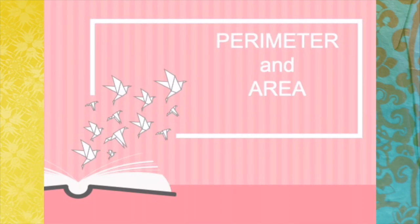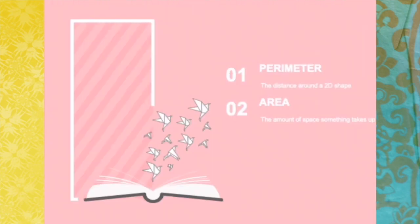Perimeter and area. First let's recap what is a perimeter and what is an area. Perimeter is the distance around a 2D shape, while the area is the amount of space something takes up.